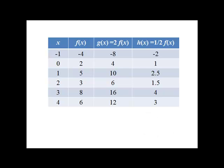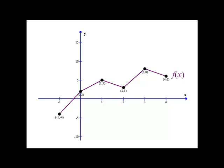So let's look at what happens graphically. We saw that this was our graph of f of x. Well, let's look at g of x, which was 2 times f of x.